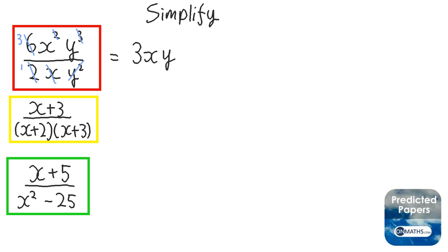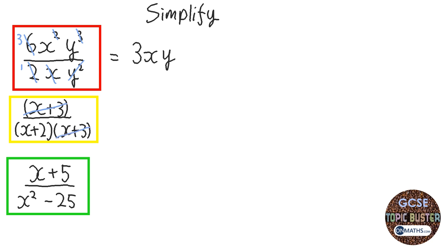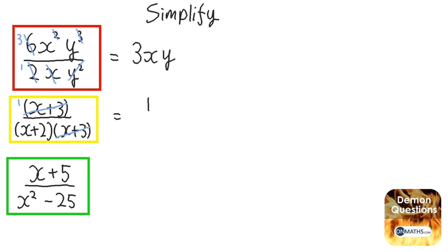So my answer to that is 3xy. Now the bottom of the fraction is 1, so I don't need to write it. The next one: technically the top and bottom of a fraction we could put brackets around. I'm looking for something at the top and bottom I can divide by — I can divide top and bottom by x plus 3. When I divide the top by x plus 3, it just leaves 1, and the bottom is x plus 2 times 1, which is just x plus 2.